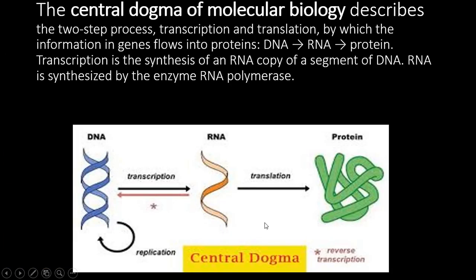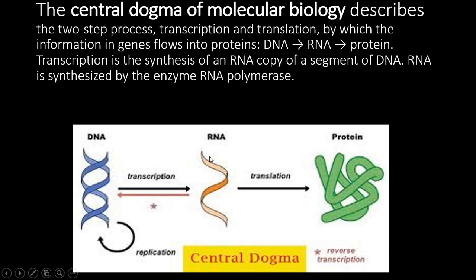In Class 11, in the chapter Biomolecules, we studied nucleic acids — DNA and RNA — which are made up of nucleotides. DNA has the information to make a particular protein. The information from DNA flows to protein through two steps: transcription and translation. This flow of information from DNA to protein is called the central dogma of molecular biology.